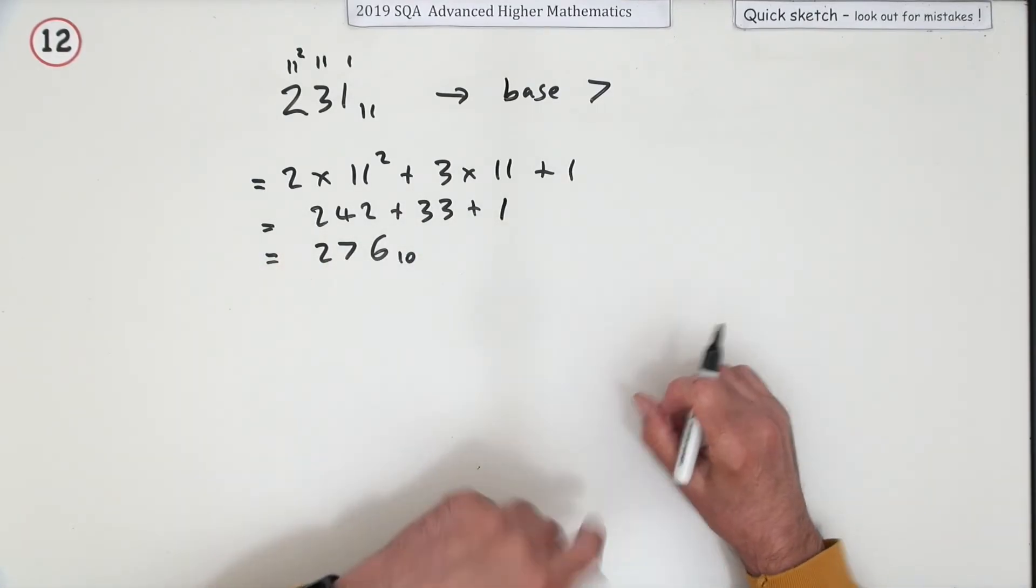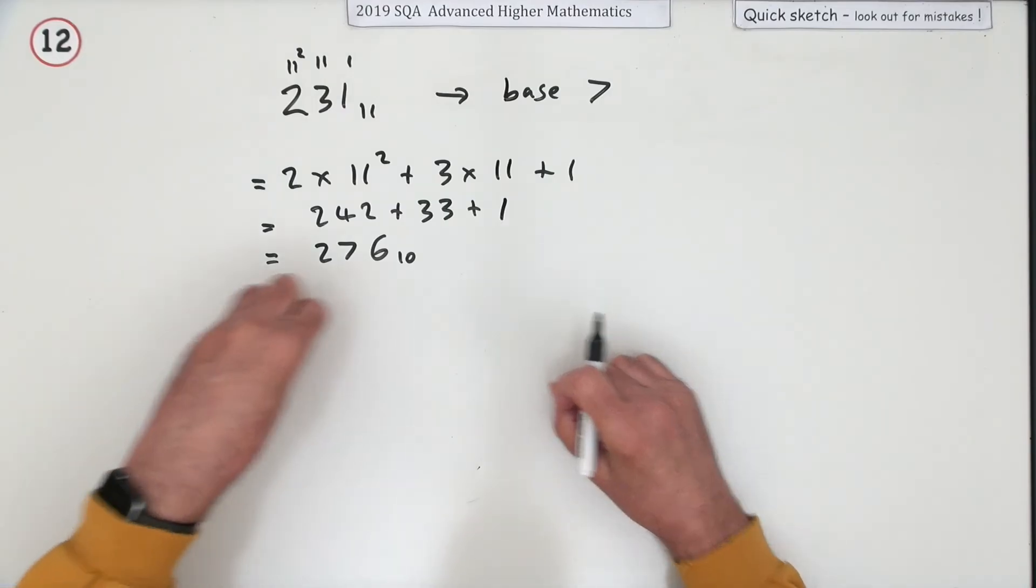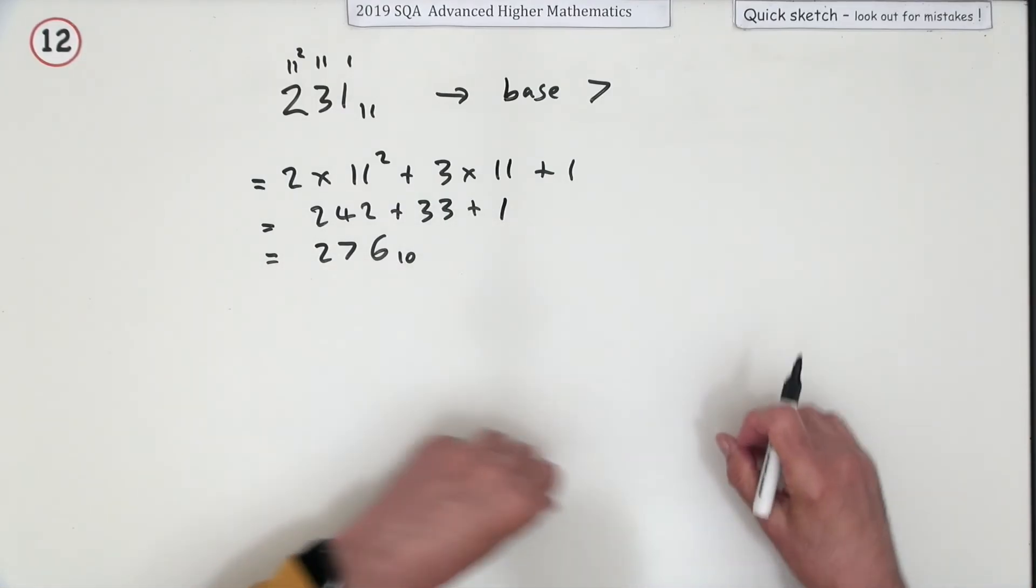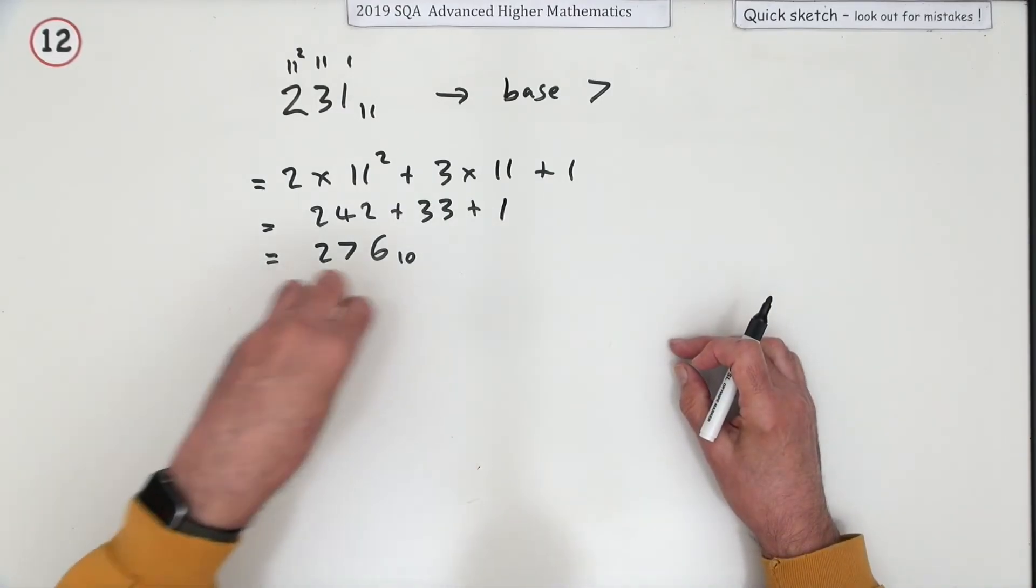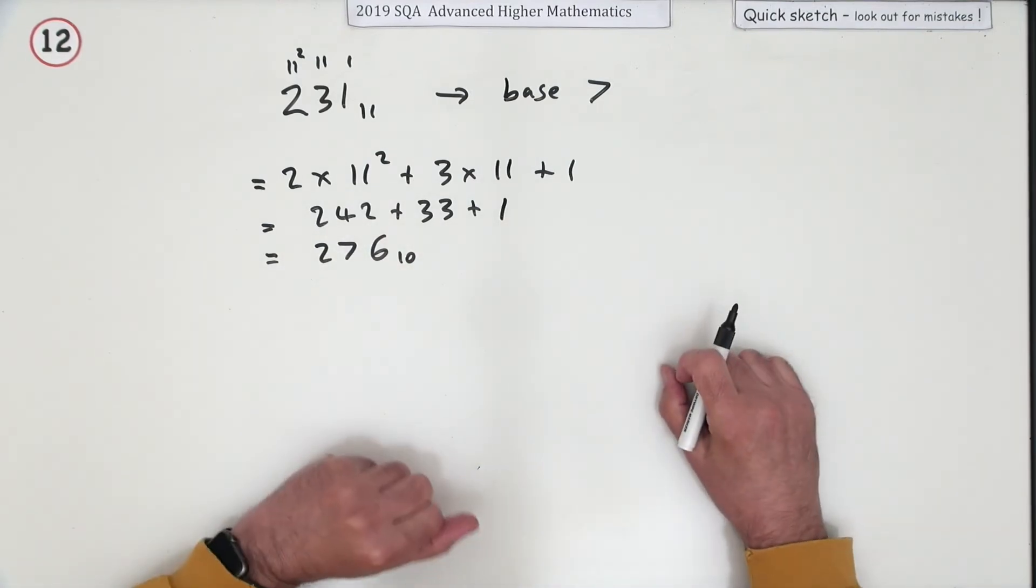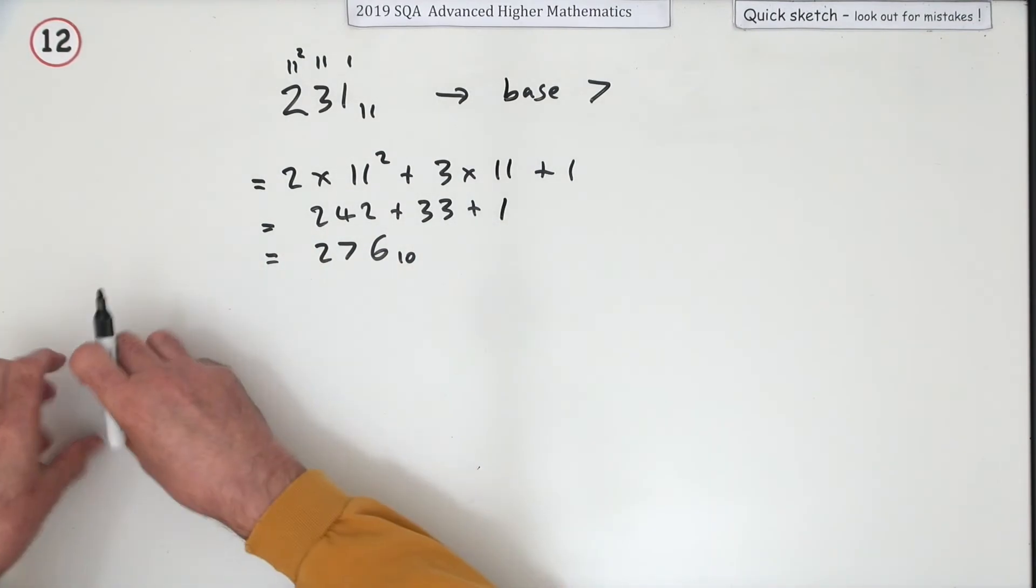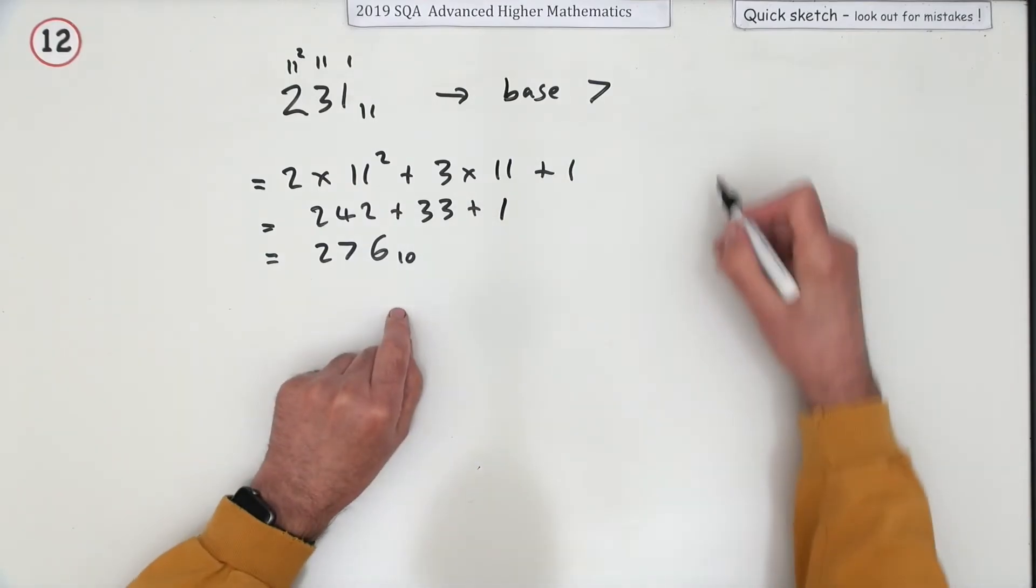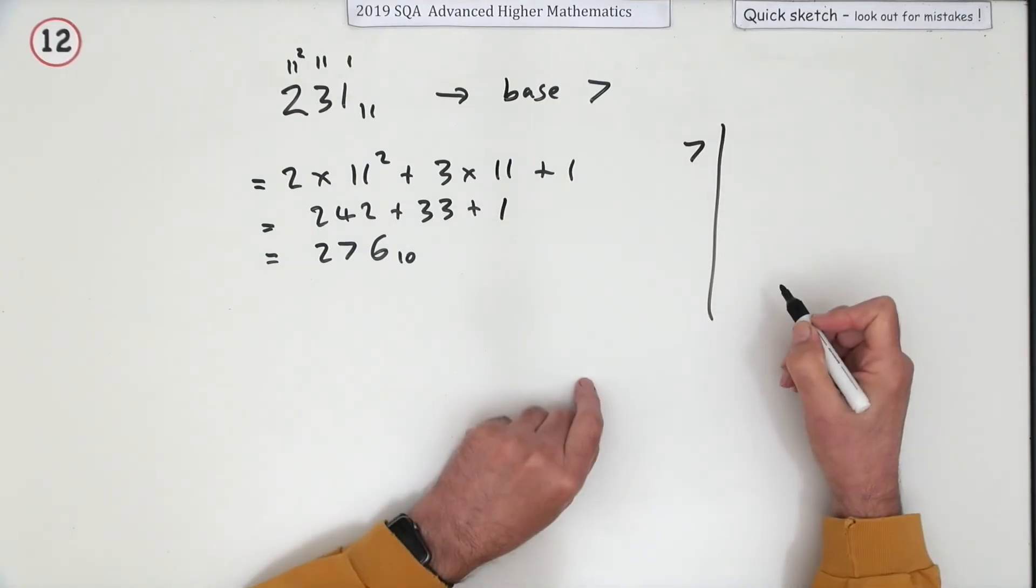Then you take your piles of 7, and you put them into new piles of 7. What you would do is keep dividing by 7.